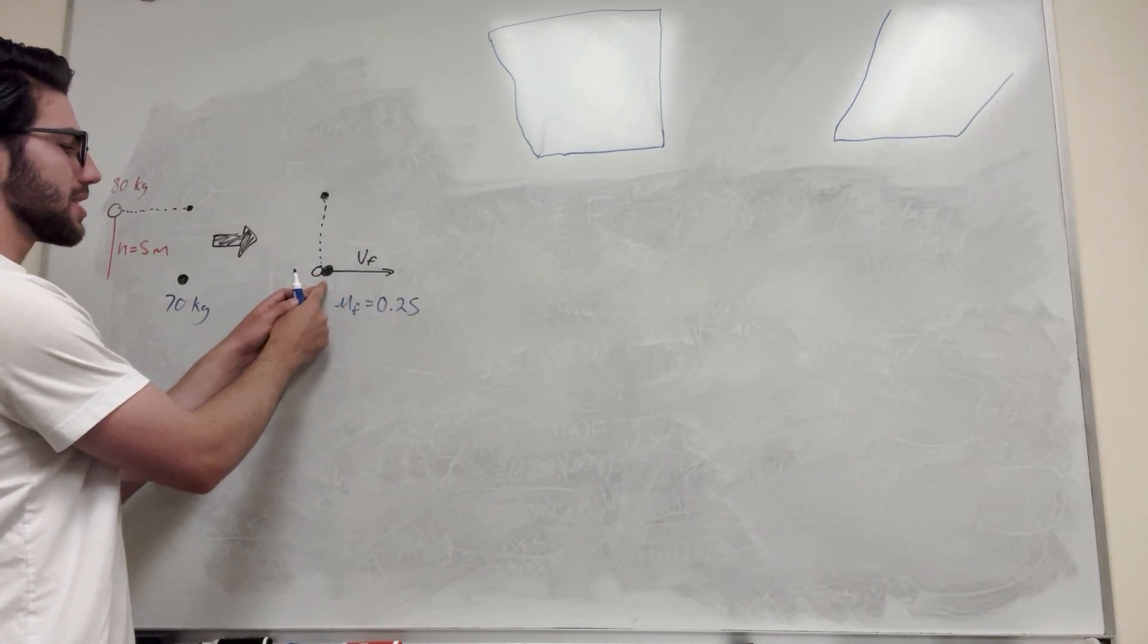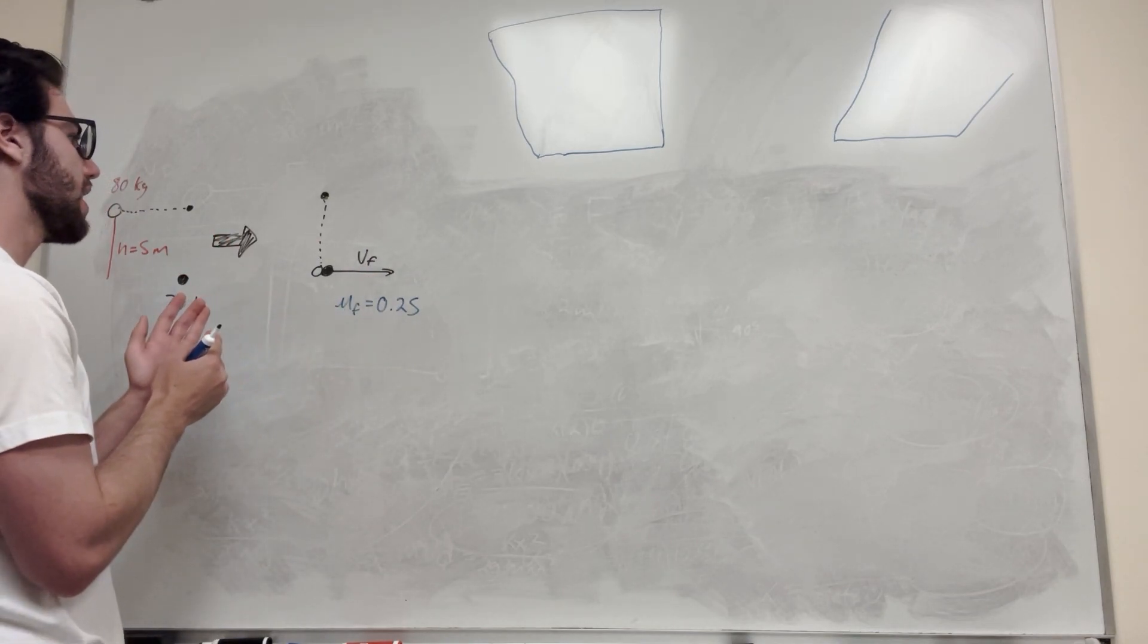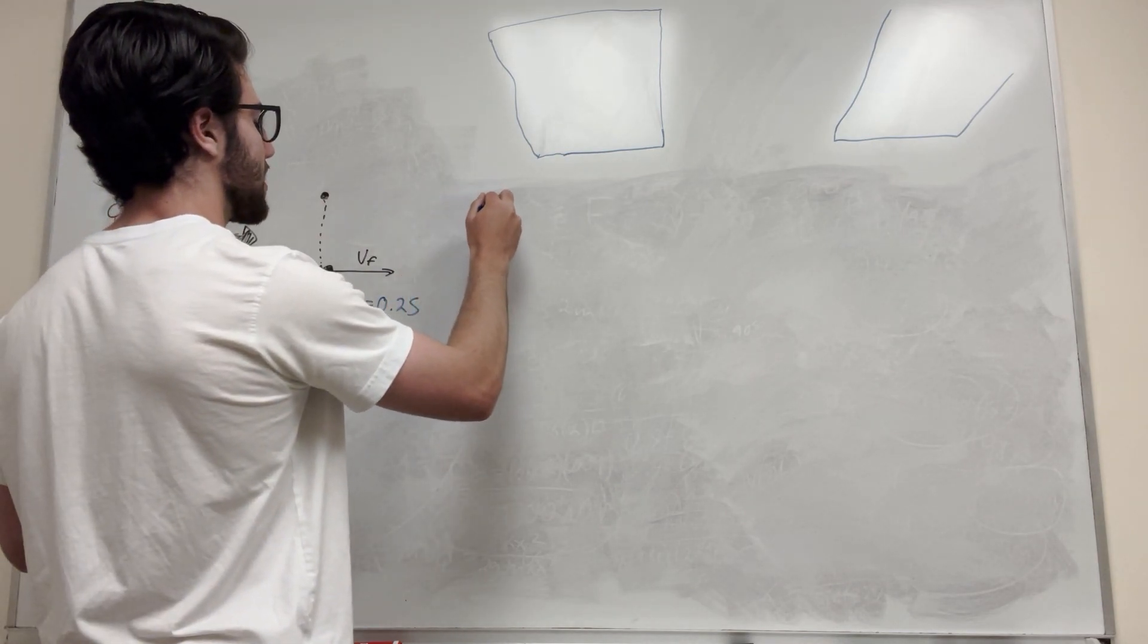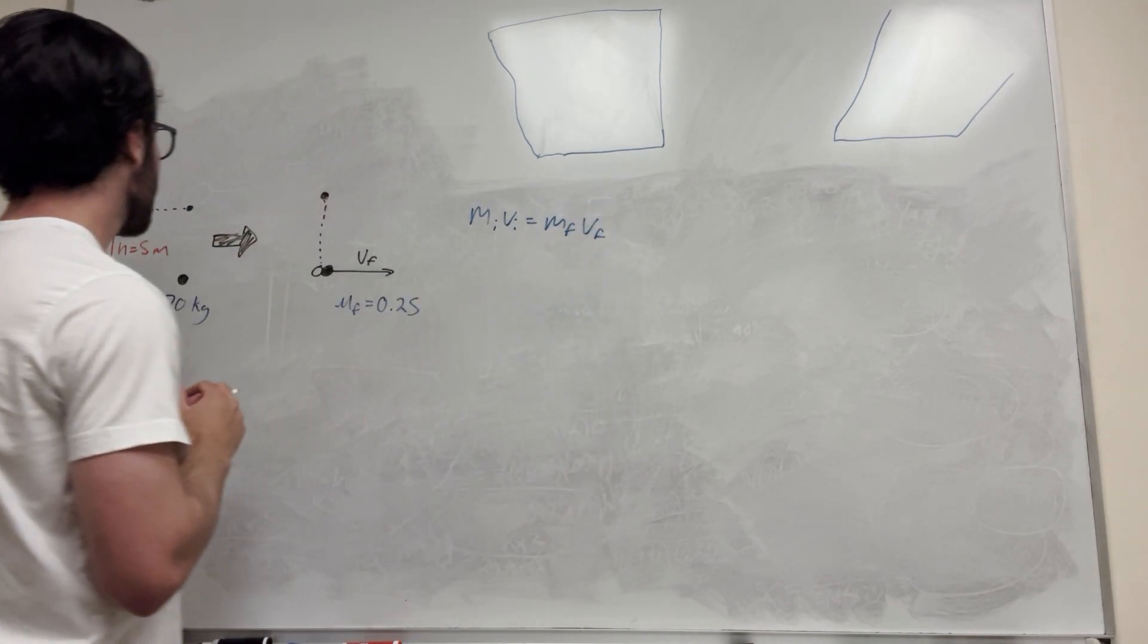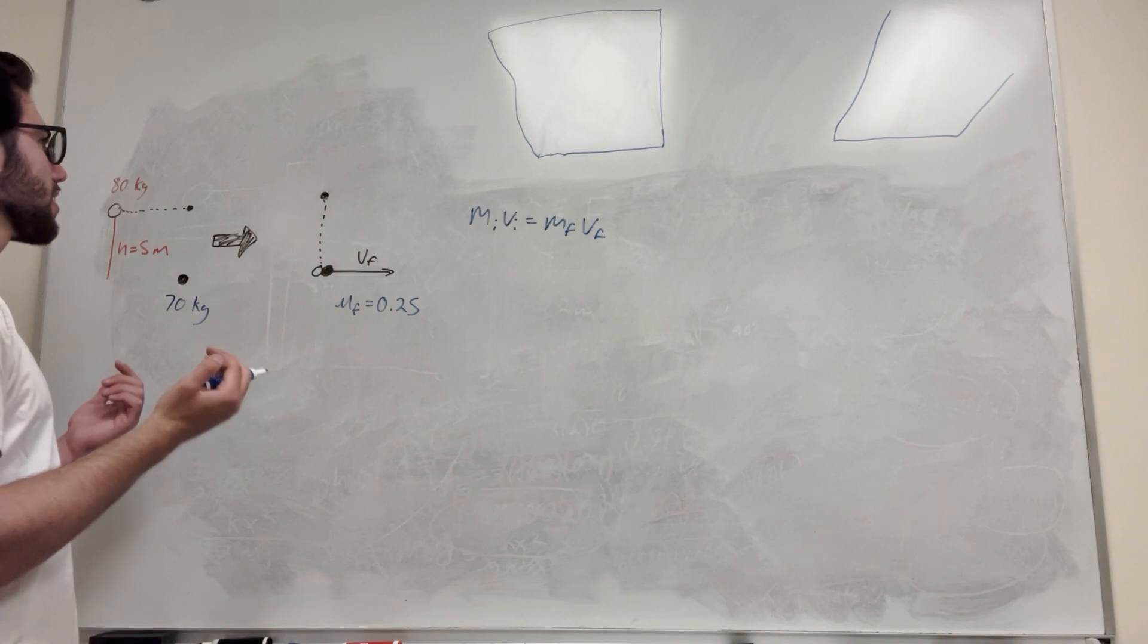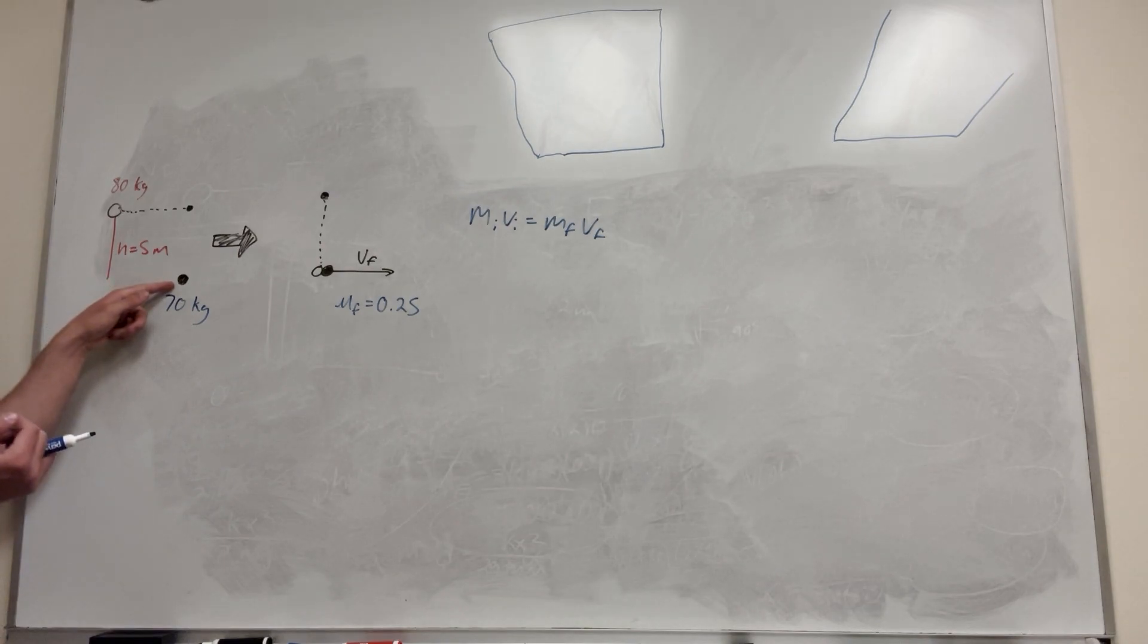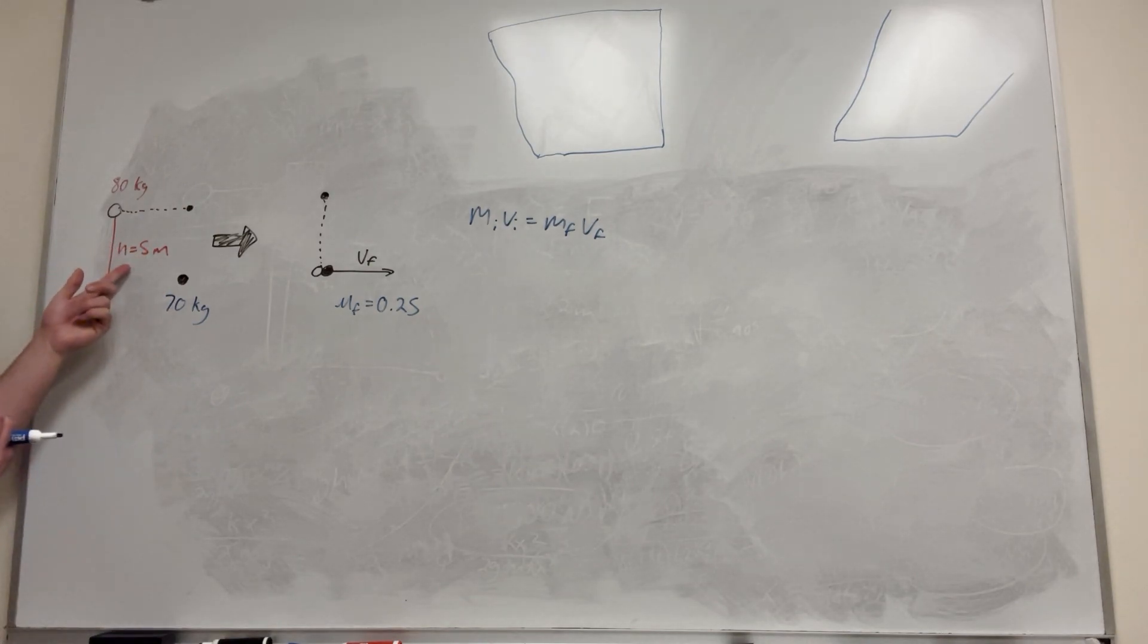So first of all, we want to find out how fast that total system here is going as soon as they collide and they start moving. So in order to do that, we need to find our formula. So we know the mass initial times velocity initial is equal to mass final times velocity final. So we're going to be able to find the mass initial, we know our mass, and then we know our velocity initial is going to be how fast this guy is going when he falls down. So we need to find how fast Batman basically is going when he reaches this point.